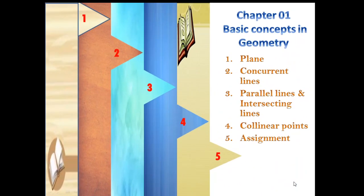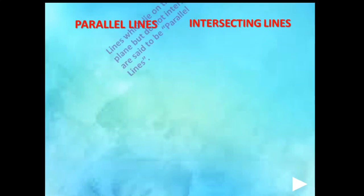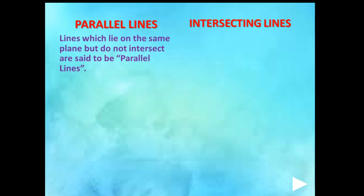The next topic is parallel lines and intersecting lines. Lines which lie on the same plane but do not intersect are said to be parallel lines. On any flat surface, if there are lines that lie in the same plane but do not intersect each other — they are away from each other — and even if extended, they are still not intersecting, such lines are called parallel lines.